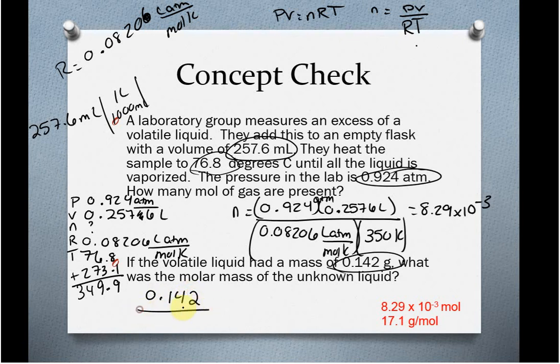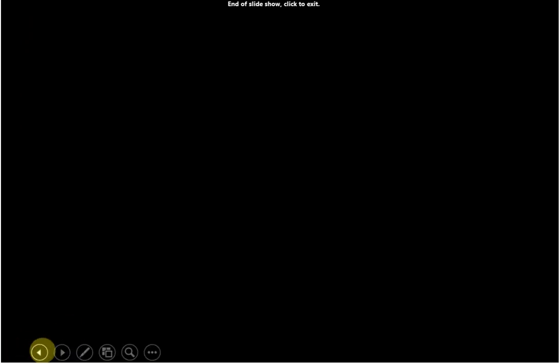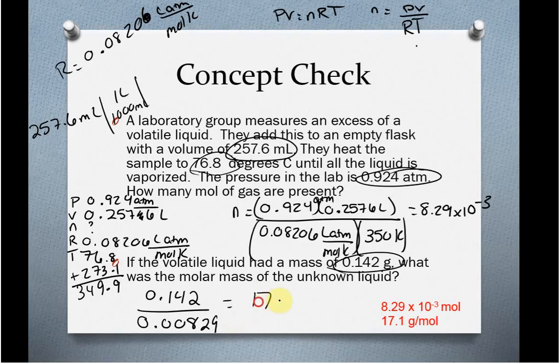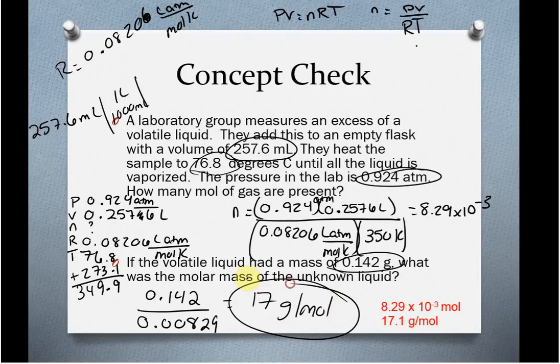So we are going to have 0.142 grams of our liquid over the 0.00829. And you get something like 17 grams per mole. And then from a list of unknowns you can actually take this and try and identify what is present there. Okay. That is it for gas stoichiometry. You have a lot more examples in your sample questions.